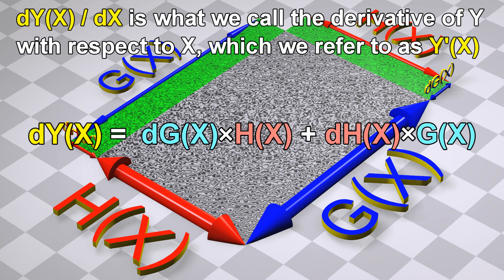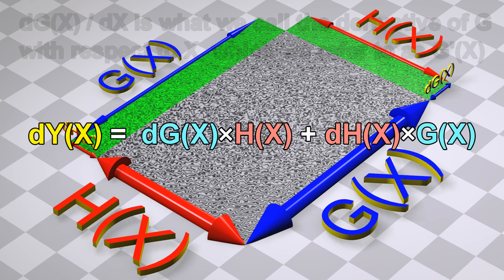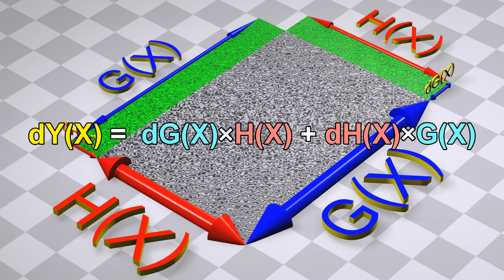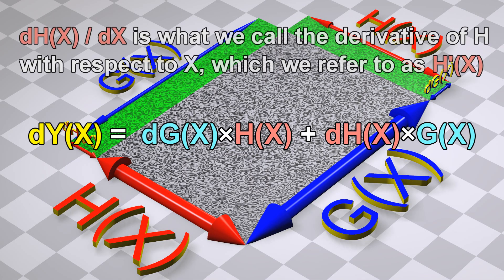dy divided by dx is what we call the derivative of y with respect to x, which we refer to as y prime. dg divided by dx is what we call the derivative of g with respect to x, which we refer to as g prime. dh divided by dx is what we call the derivative of h with respect to x, which we refer to as h prime.